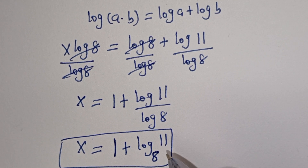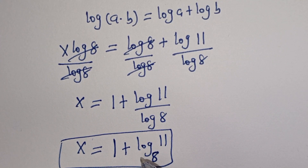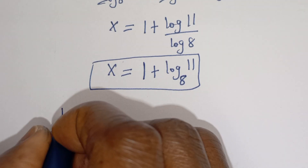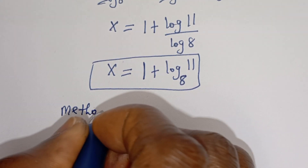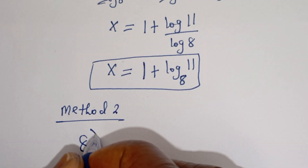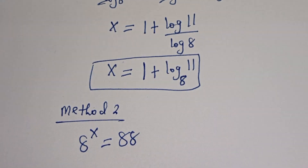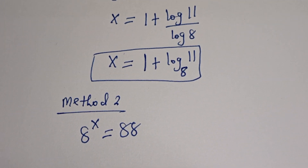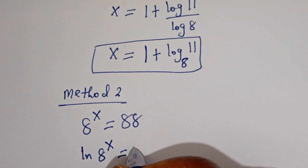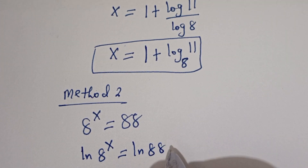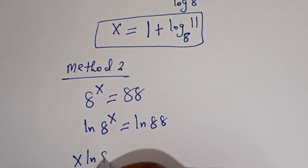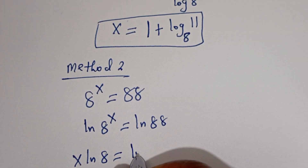In order to use a calculator, let's consider Method 2. We have 8 to the power of s is equal to 88. Now let's take the natural log of both sides. Then ln of 8 to the power of s is equal to ln of 88.